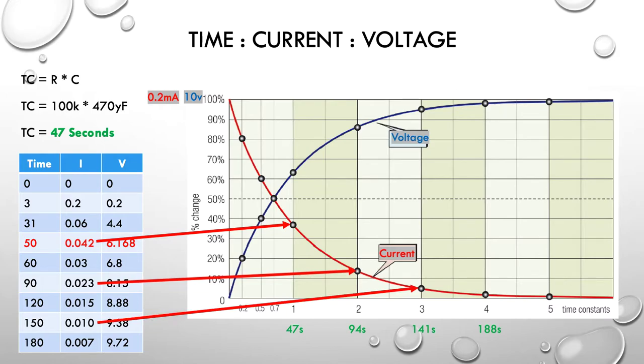At three time constants, we're going to be down about 5%, which would be about 0.010, which it is. So, again, we expected that as a percentage of 0.2 milliamps, about 5% of the two, it's going to be about 0.01.